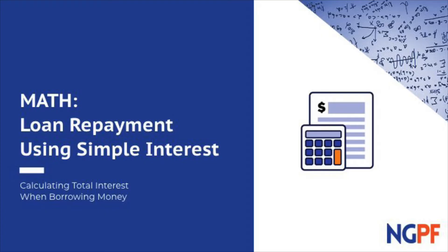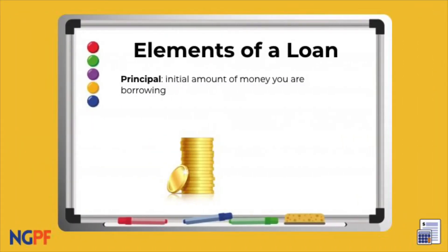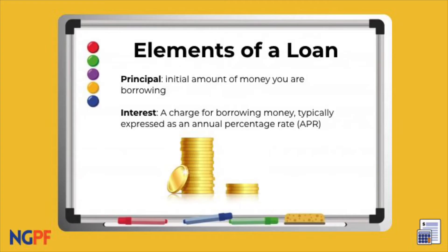Let's first talk about a couple of elements of a loan. The principal is the initial amount of money you are borrowing. Then you will be charged interest, which is the fee you have to pay for borrowing the money. This usually comes up as an annual interest rate, which is calculated as if you were borrowing the money for 12 months.